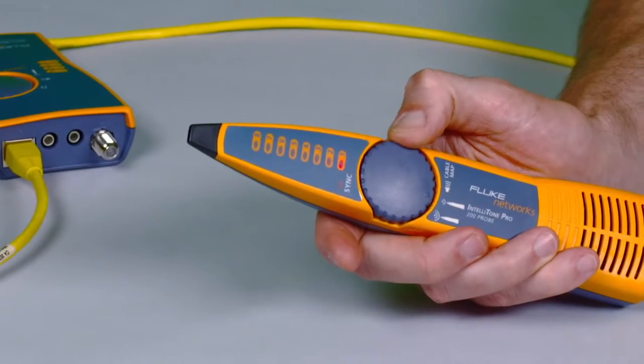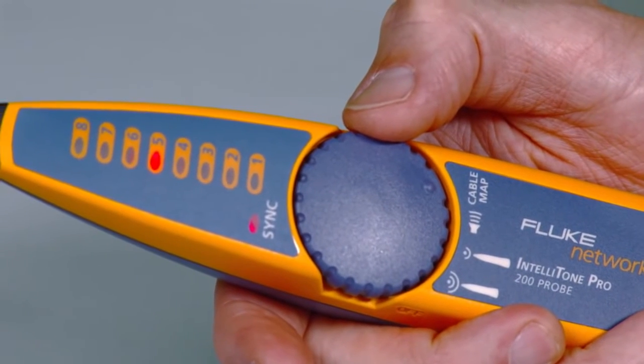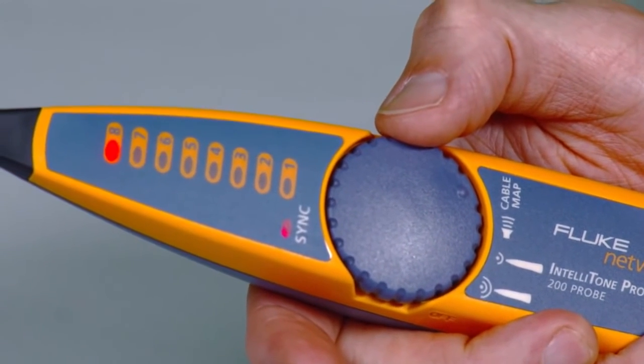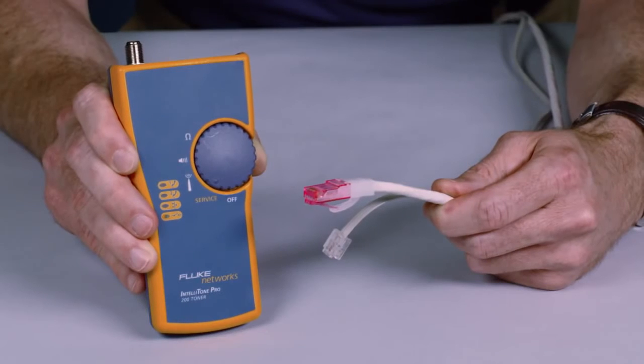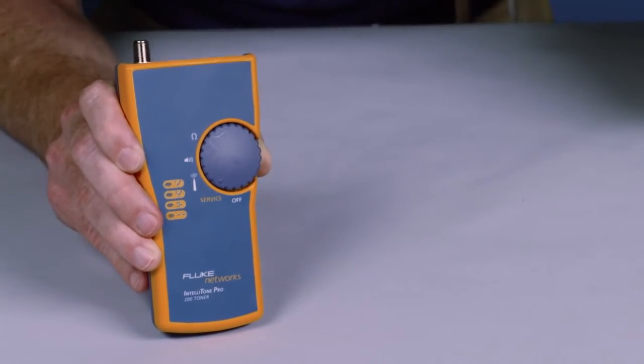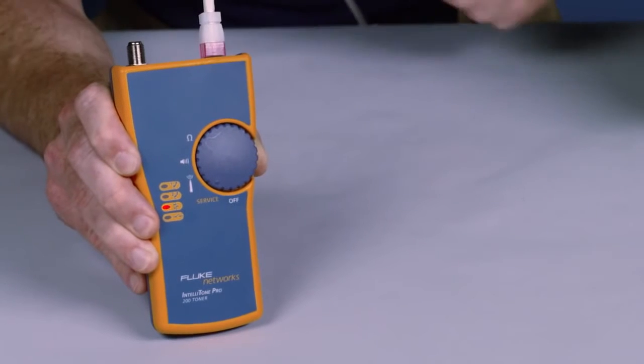The toner and probe feature a thumb wheel ergonomic design and status indicators give easy-to-read feedback. The mystery of identifying cable services becomes history. Know if it's a data, telco, or dead jack instantly.